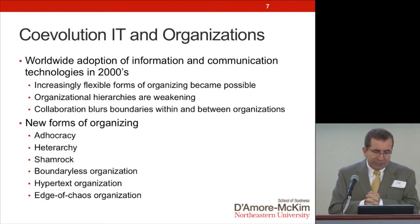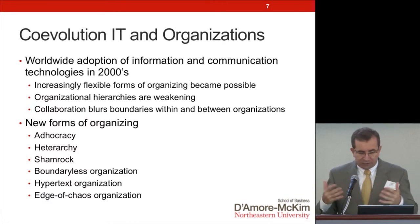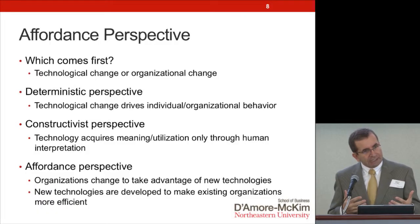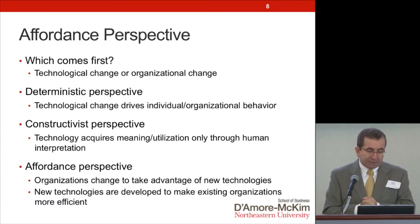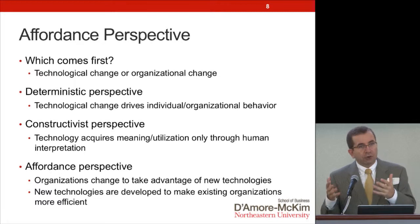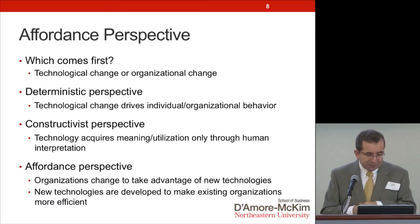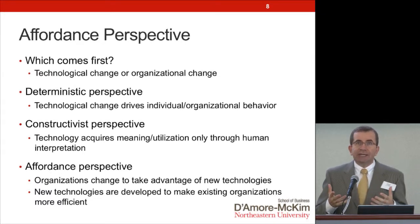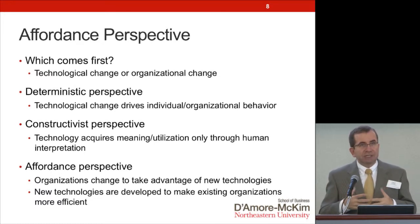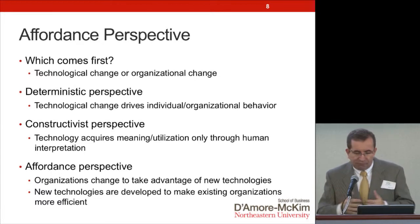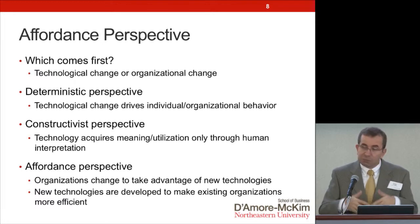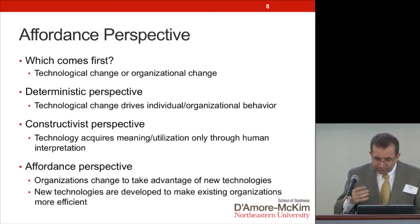Here I'll take what the literature calls an affordance perspective. In the dance between information technology and organizational forms, which comes first — the technology or the organization? One perspective, the deterministic view, says technology is what it is and will determine your behavior. The other, the constructivist perspective, says technology is what you make of it — if your organization needs a certain technology, it will be developed or will evolve. The affordance perspective says both are right, and that technologies and organizational forms evolve concurrently.